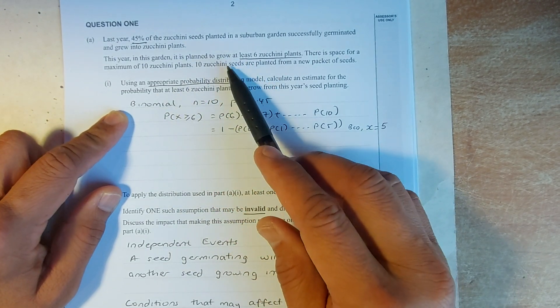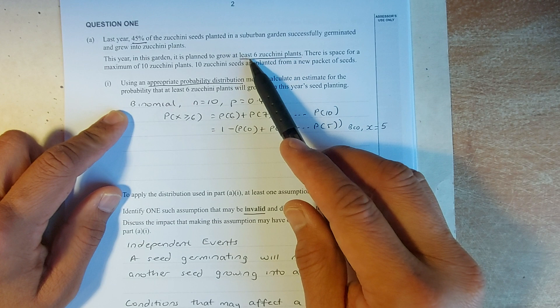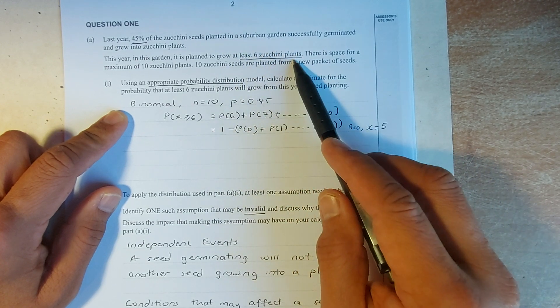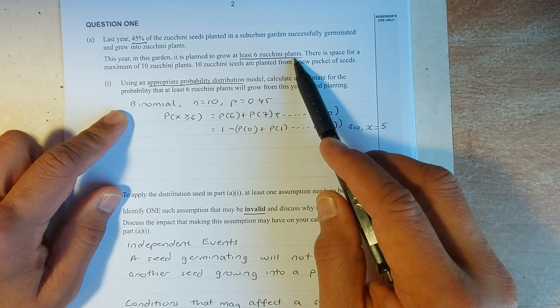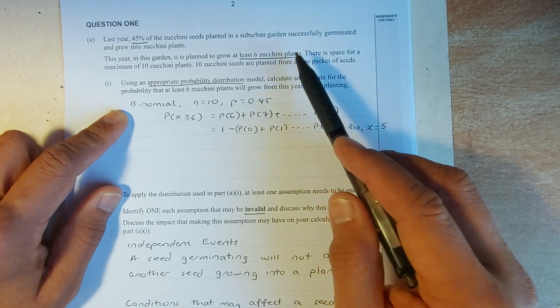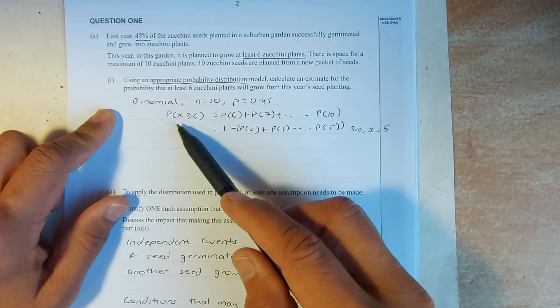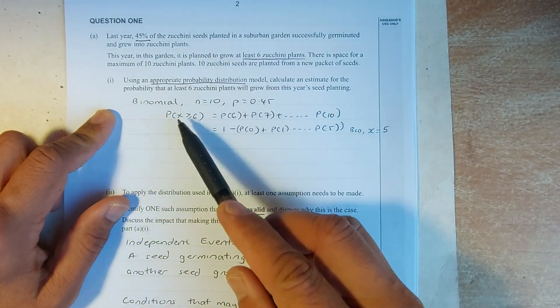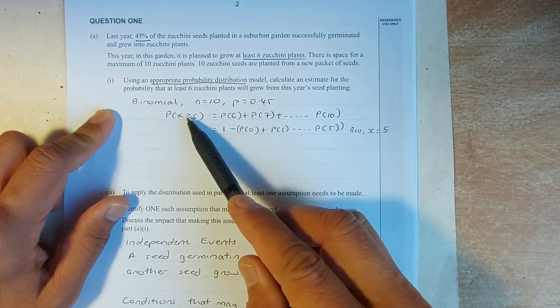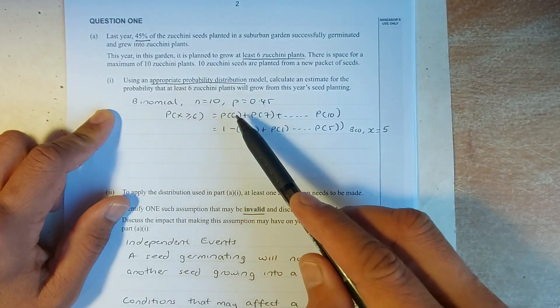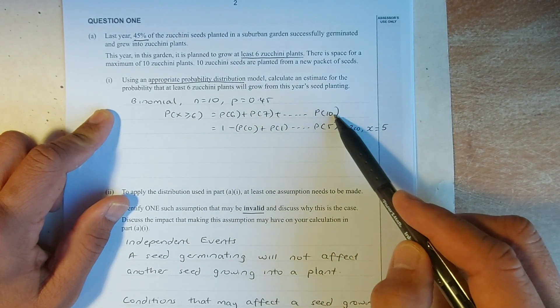So you have a fixed number of trials which is 10 and you want to find the probability that at least 6 Giustini plants is to be grown from the seed. To calculate the probability of X which is at least 6 means it must be X equal or greater than 6. So, we are looking at a probability of 6, 7, 8, 9, 10.